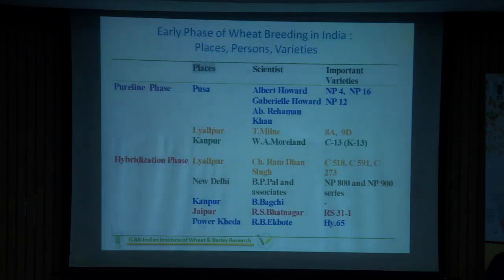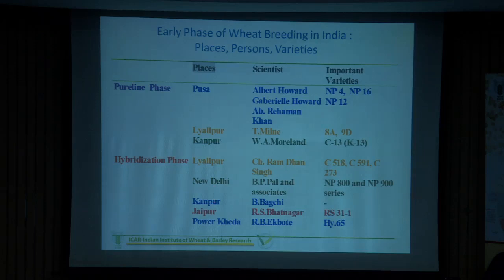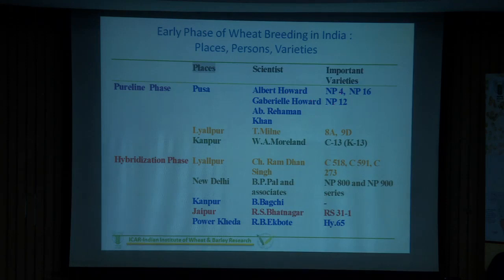After that, research work started using these land races. Institutions at Pusa, Lyallpur, Kanpur, and others were associated with wheat breeding programs. Five agricultural colleges were set up across India in the early 1900s. These are the places where landmark varieties or selections from land races were developed, followed by hybridization programs at Lyallpur, New Delhi, and Kanpur.